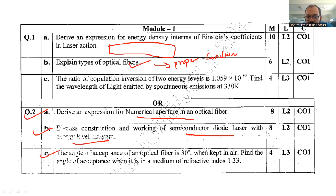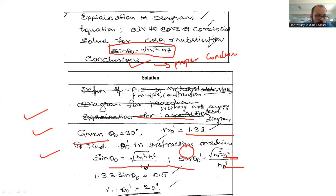Another one is a numerical problem with weightage of four marks. Angle of acceptance of optical fiber is 30 degrees, which is kept in air. Find the angle of acceptance when it is in the medium of refractive index 1.33. So the theta naught is given, N naught is also provided. The formula is sine theta naught equals N1 square minus N2 square by N naught dash. Use the formula accordingly. Ultimately you will get sine theta naught. From that, take the sine inverse and you will get 22 degrees.